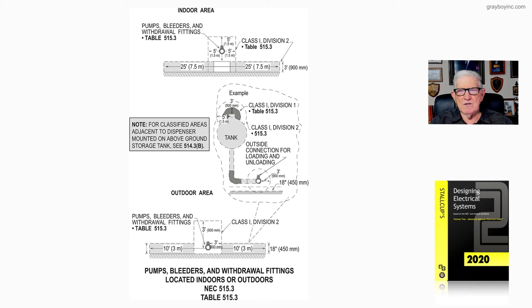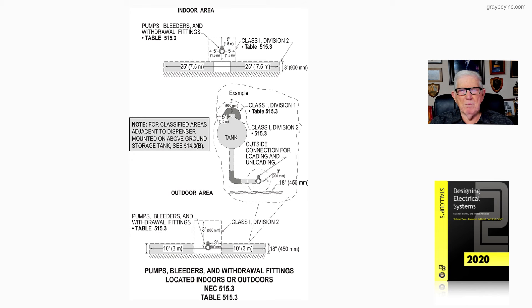But you're outside now, so you have a classification that includes both Class 1 Division 1 and Class 1 Division 2, as illustrated there. The note points out that for classified areas adjacent to a dispenser mounted on or above a grade storage tank, see 514.3B in the NEC.